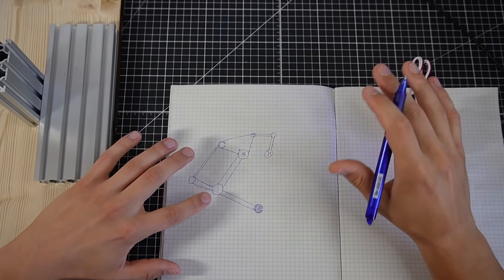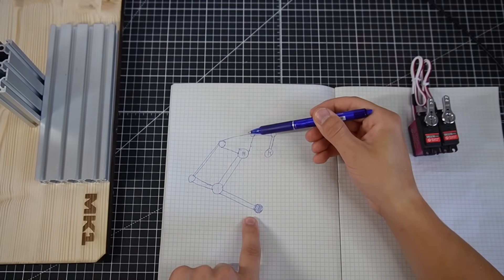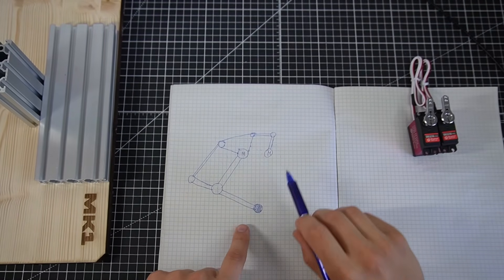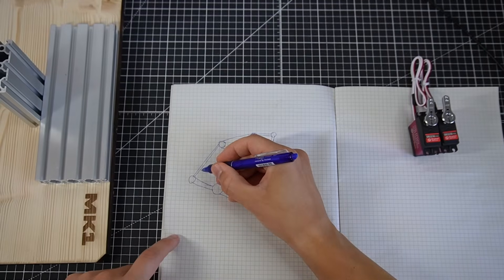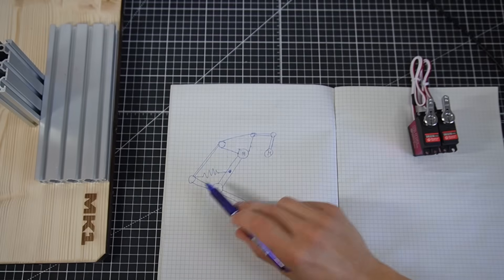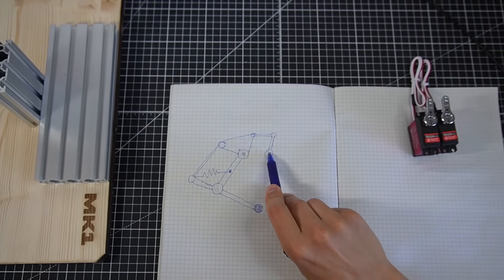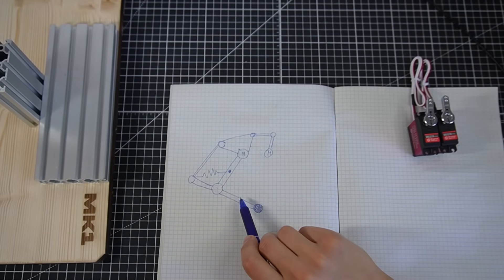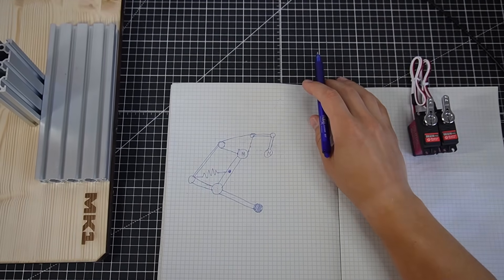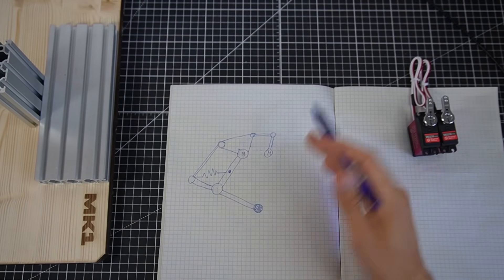Another thing which is great about this is we can add a spring. So this way the leg would just want to fall down, but we want it to stand, so we could add a spring, for example, here. This spring would help to offset the torque of this joint, which means this motor is gonna have an easier job of keeping the leg standing. Hopefully, this spring will be strong enough to make the leg stand and maybe even jump.